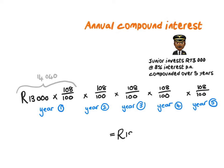When you do all of this you will get an answer of 19,101. Always remember to round off to two decimal places, so rounded off that gives us 19,101.27 Rand.